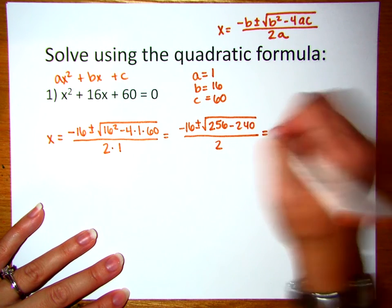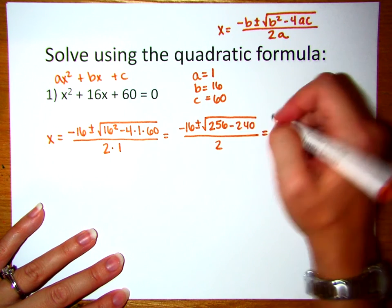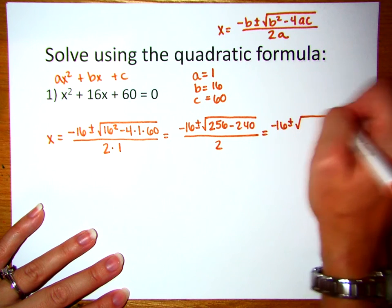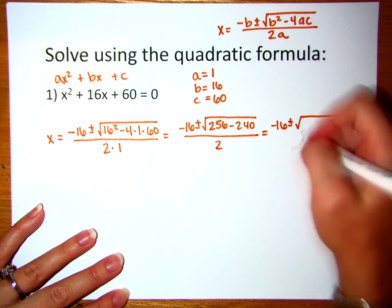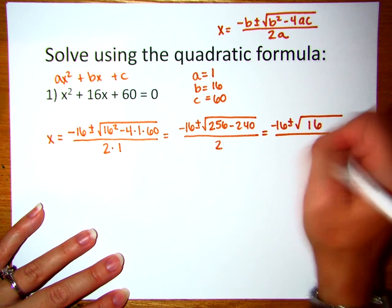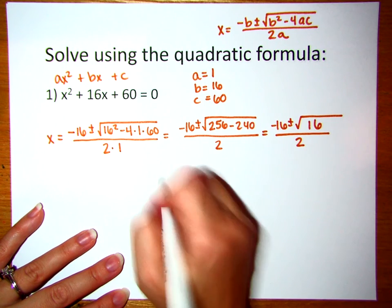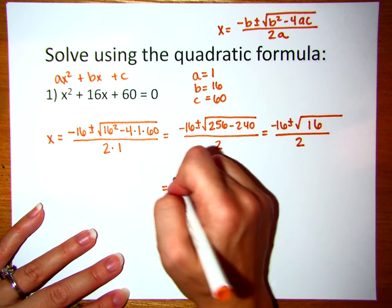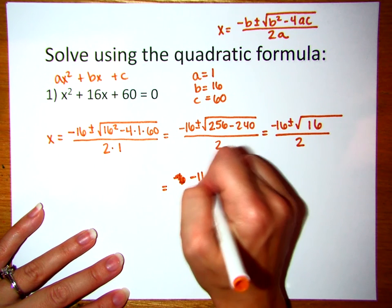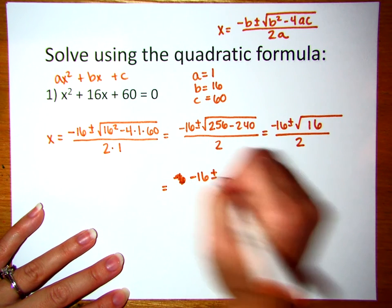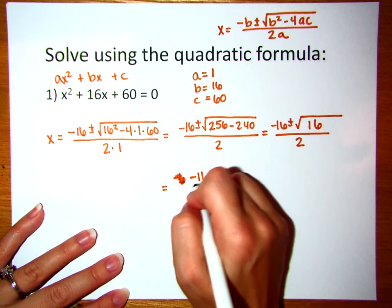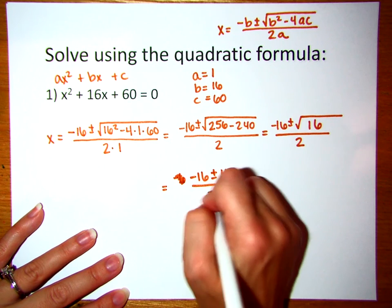We clean it up some more, working with that discriminant on the inside. So we have negative 16 plus or minus the square root of 256 minus 240, which is 16, divided by 2. Continuing on, negative 16 plus or minus — the square root of 16 is 4 — all that divided by 2.